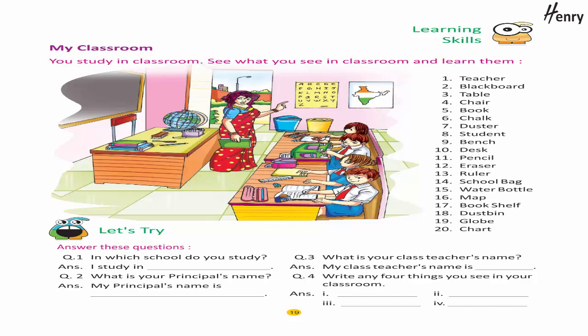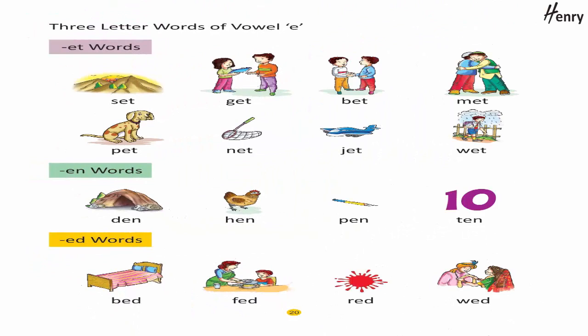Three-letter words of vowel E. -ET words: Set, Get, Bet, Met, Pet, Net, Jet, Wet.